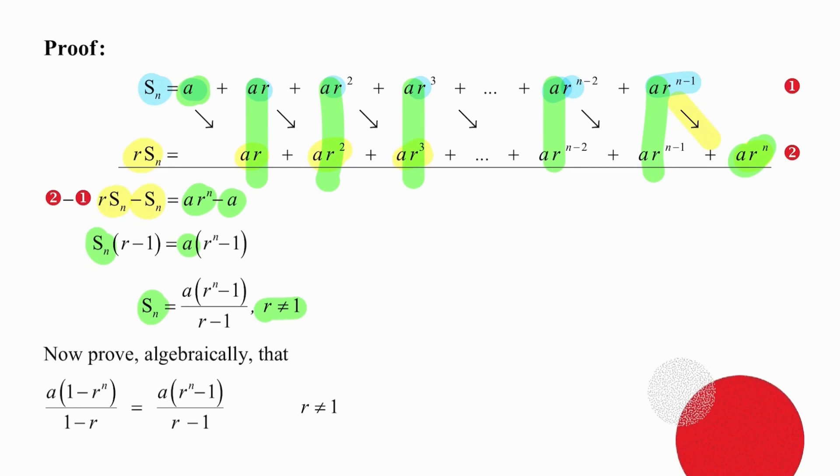Algebraically, the two statements below are the same. You'll notice that in the first statement, the ones are first, and in the second statement, the ratios are first. So we're going to have a quick look at that proof.